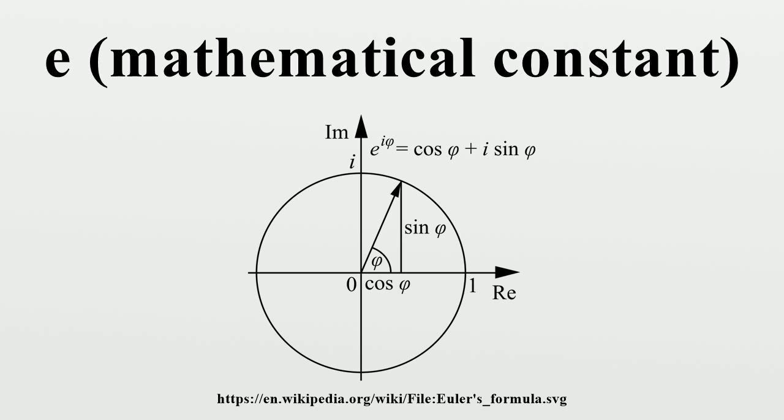There are thus two ways in which to select a special number a = e. One way is to set the derivative of the exponential function a^x to a^x, and solve for a. The other way is to set the derivative of the base a logarithm to 1/x, and solve for a.